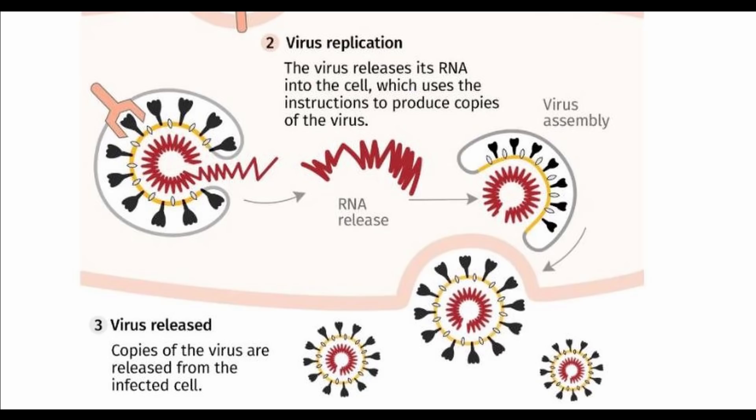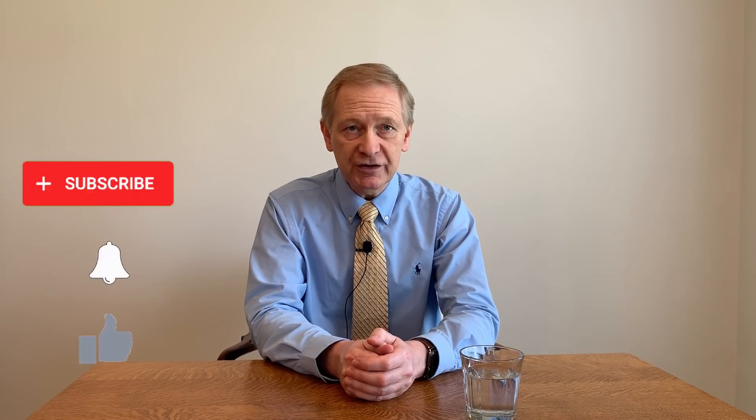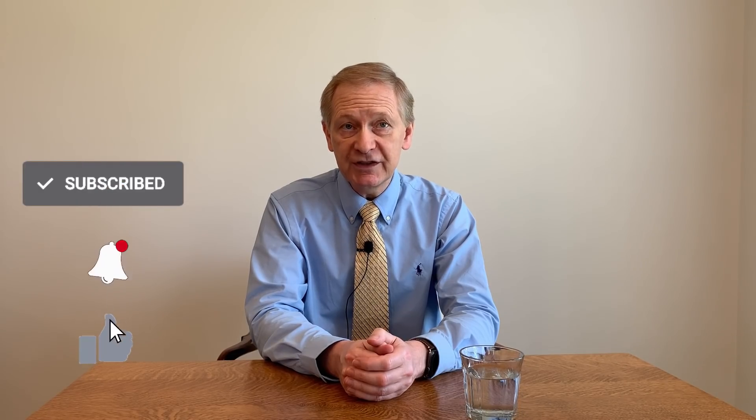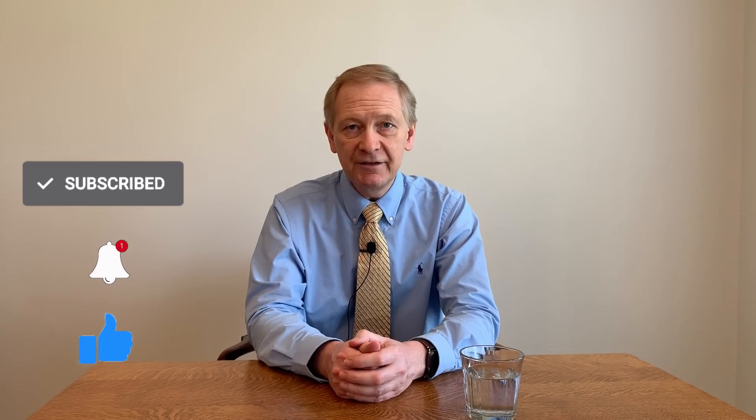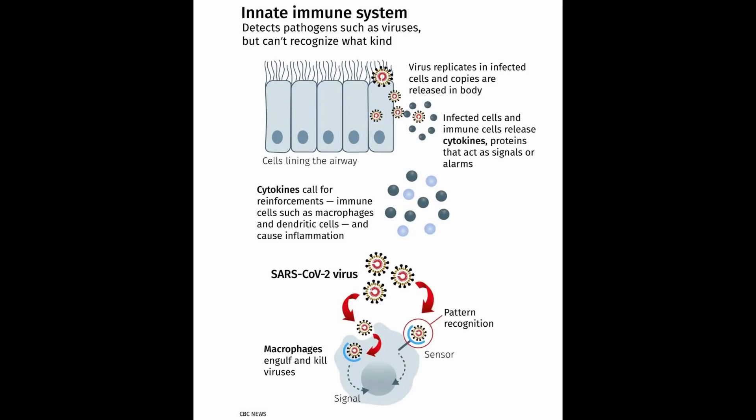The virus is then expelled from the infected human cell. As this process occurs, our adaptive immunity and innate immunity comes alive. This slide shows our innate immune system. These infected cells and immune cells will release cytokines, which are proteins that signal for what's going on — essentially they call in reinforcements. The reinforcements are macrophages, which can eat up the virus, as well as dendritic cells, which present the foreign antigen — the COVID-19 virus — to other cells.